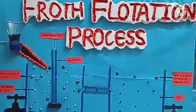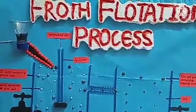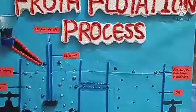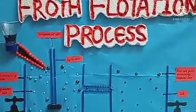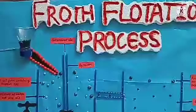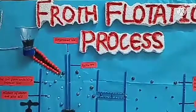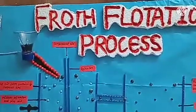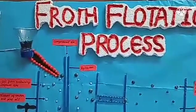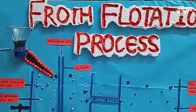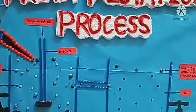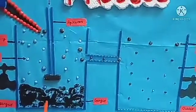This is the model of froth flotation for class 10th. Now the examiner asks the basic question: what is froth flotation process? In this process, pine oil or potassium ethyl xanthate and finely ground sulfide ore are placed into a big tank filled with water. Air is blown under pressure vigorously. The concentrated ore in the form of froth floats over the surface. Impurities remain settled down at the bottom.